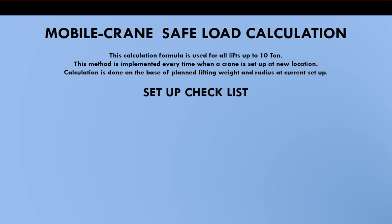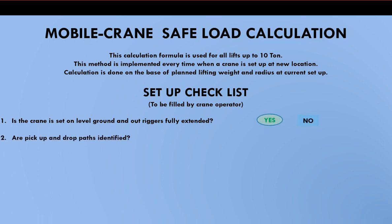The operator will fill the checklist before the start of any activity. He will check five questions, and the answer to these questions should be yes. Question 1: Is the crane set on level ground with outriggers fully extended? Question 2: Are pickup and drop points and drop paths identified?